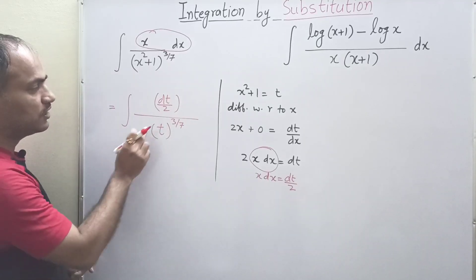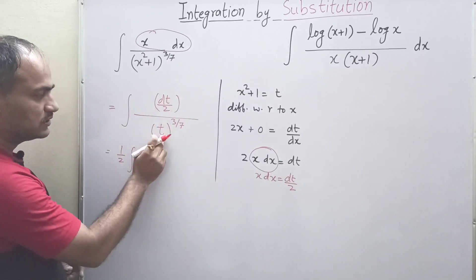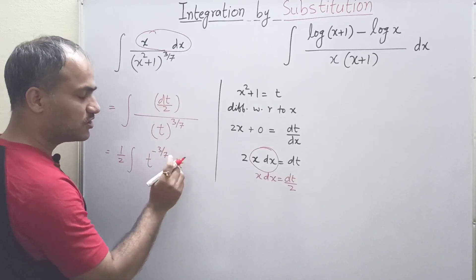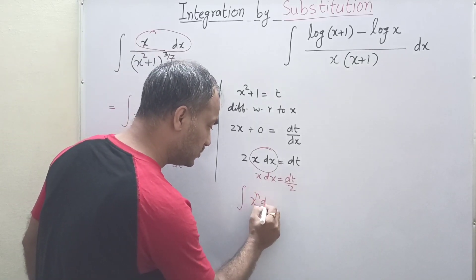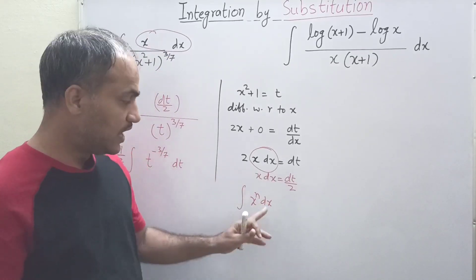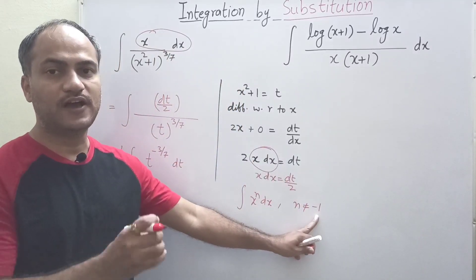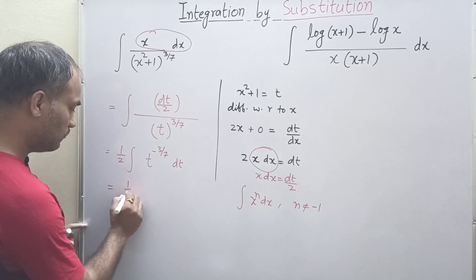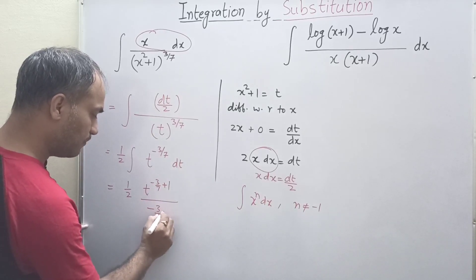We know the property that all constants can be taken outside the integral, so 1/2 comes out. Bringing the power to the numerator gives us t to the power minus 3/7, and we apply the power rule formula: the integral of x to the power n dx, which is applicable for every real number n except n equals minus 1. Applying this formula gives us (1/2) · t to the power (minus 3/7 + 1) divided by (minus 3/7 + 1).